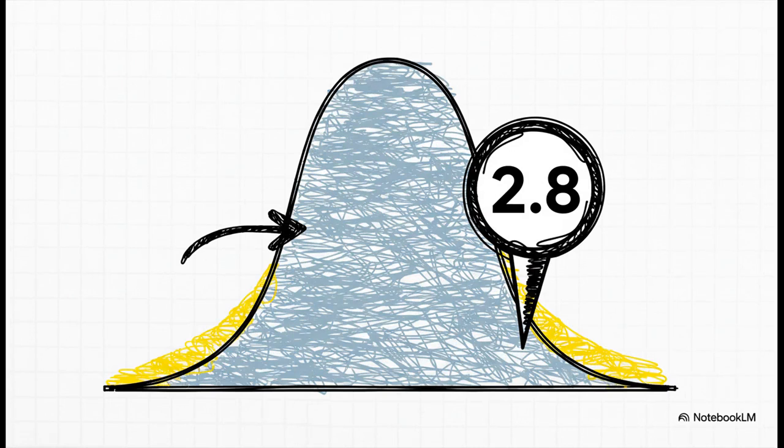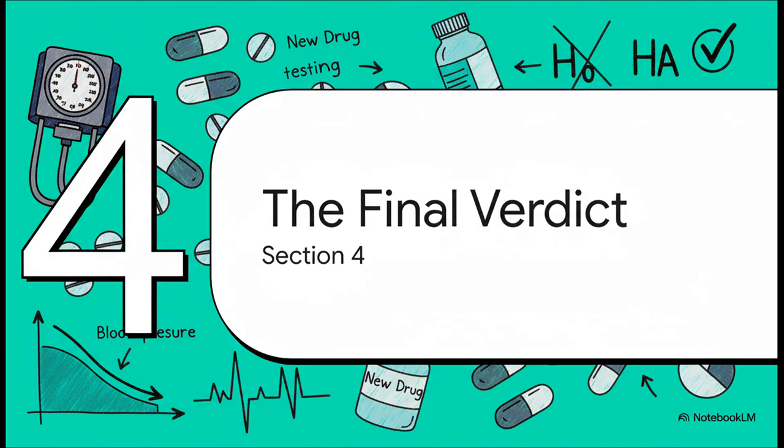Okay, so this is the moment of truth. We take our evidence, our t-value of 2.8, and we find its location on this map. And look at that. It lands way out in the tail. This is a huge deal. It tells us our result is rare. It's an outlier. It is not the kind of result you'd expect to get if the drug had no effect. So things are looking really, really promising. The evidence seems strong. But in science, we need to be extra sure. We need one final piece of the puzzle to make our final call. And that piece of the puzzle is called the p-value.